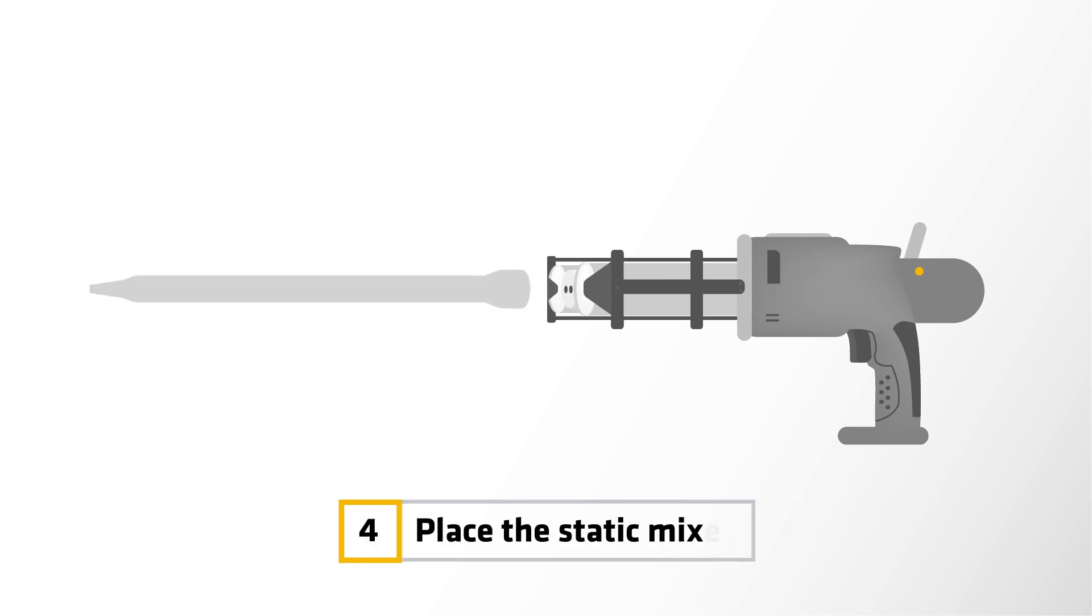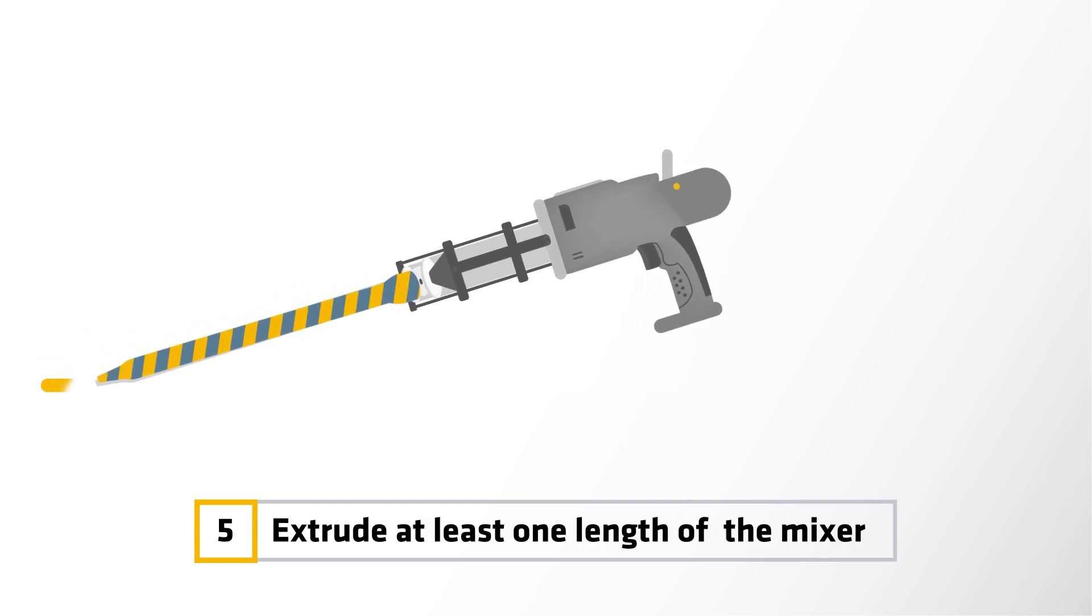Position the static mixer in place and secure it by tightening the plastic retaining nut. To ensure homogenous mixing, extrude a minimum of one length of the mixer.